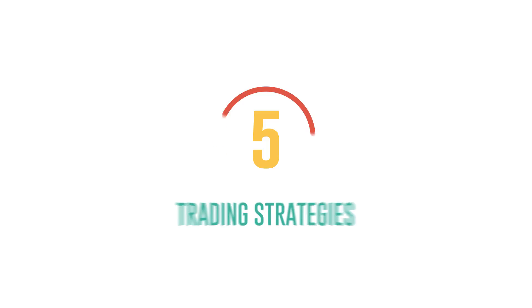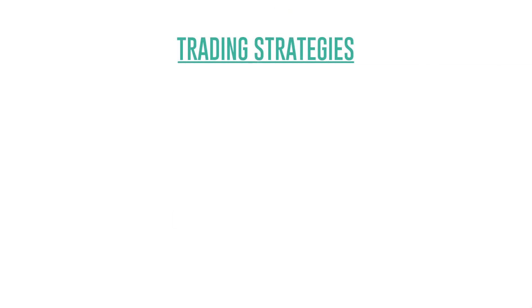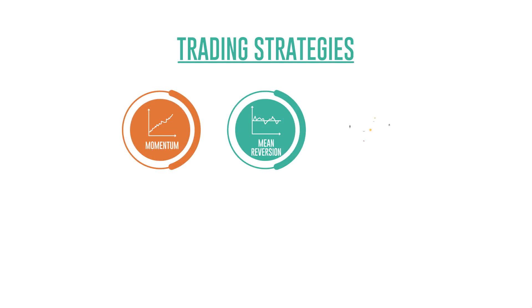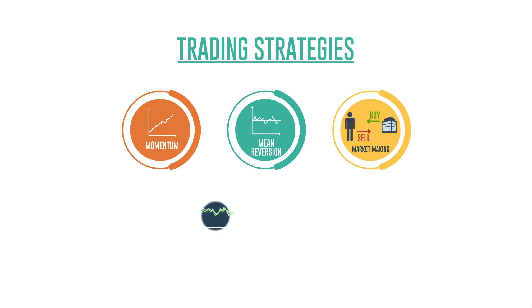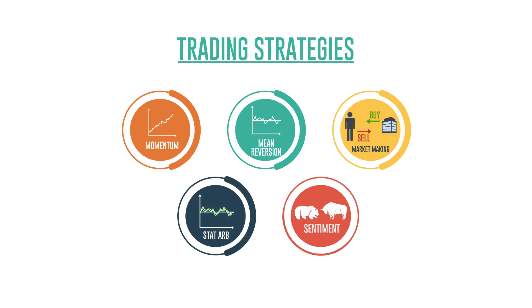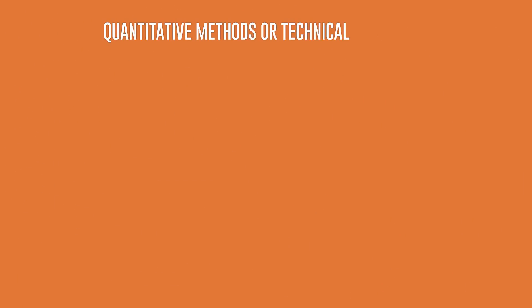There are mainly five different types of trading strategies when it comes to automated or algorithmic trading. They are: 1. Momentum, 2. Mean reversion, 3. Market making, 4. Statistical arbitrage, and 5. Sentiment-based quantitative methods or technical indicators.